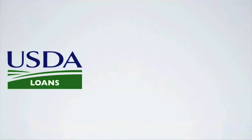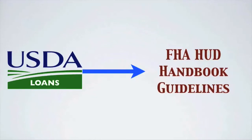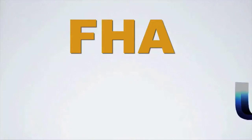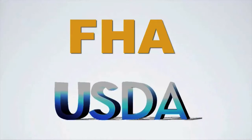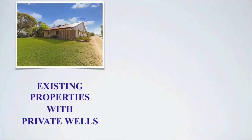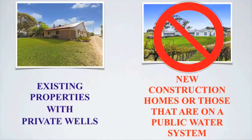As a quick review, USDA loans follow FHA HUD handbook guidelines for minimum property requirements. So for today's video, the distances and measurements given will be applicable to both FHA and USDA home loans. Also, our content today will be for existing properties with private wells, and not for new construction homes or for those that are on a public water system.